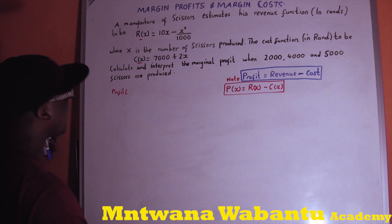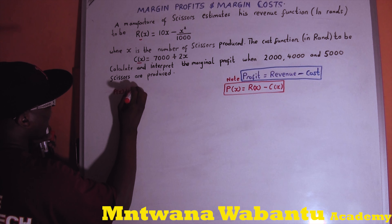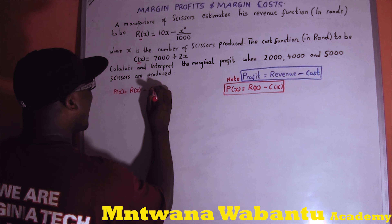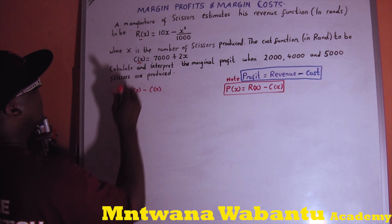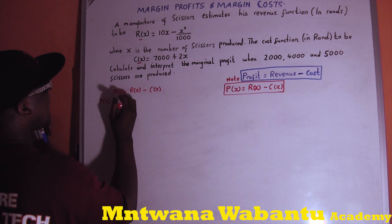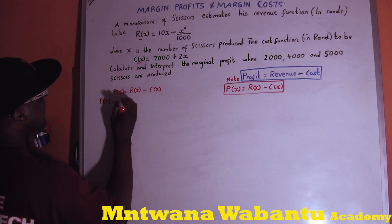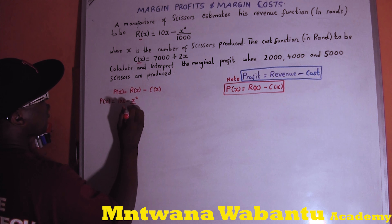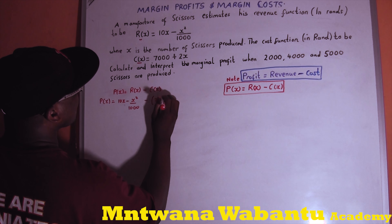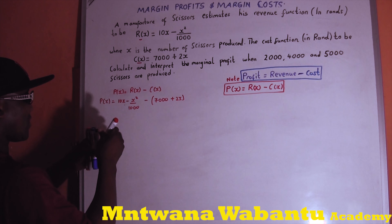The profit function — P of x, the profit function — equals the revenue function minus the cost function. So our profit function equals the revenue, which is 10x minus x-squared over 1000, minus our cost function, which is 7000 plus 2x. Put the cost function in brackets.